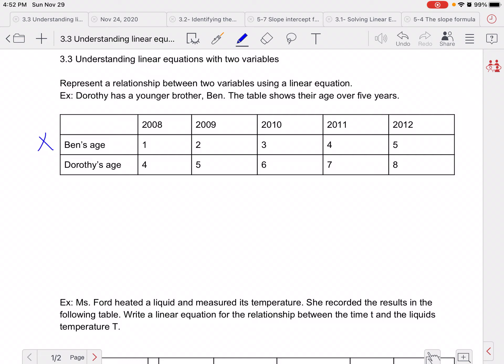So when we're looking at a table, we typically call the top line X and the bottom line Y. This information is kind of irrelevant to us. They're just saying in the year 2008, Ben was one, Dorothy was four. So we don't really need that information. I'm not overly concerned. So what I'm going to do is I'm going to make a little table of X and Y.